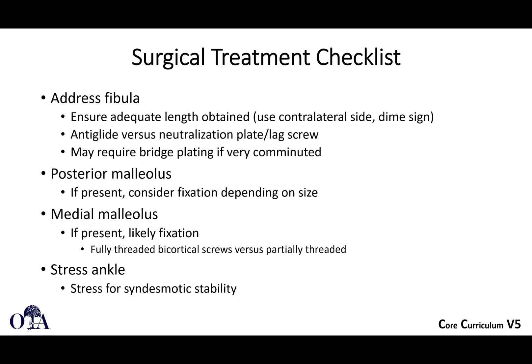Surgical treatment checklist: address the fibula — ensure adequate length is obtained, use the contralateral side to evaluate this. There's something called the dime sign that you can see on X-ray that can sometimes help confirm you've restored fibular length. With fixation, you have to consider anti-glide versus neutralization plate with a lag screw — classic AO techniques. Sometimes if very comminuted, you might need bridge plating. Posterior malleolus fracture will be covered in the next video. Medial malleolus, if present, will likely need to be fixed unless it's very small. At the end of your case, you typically want to stress the ankle for syndesmotic stability.